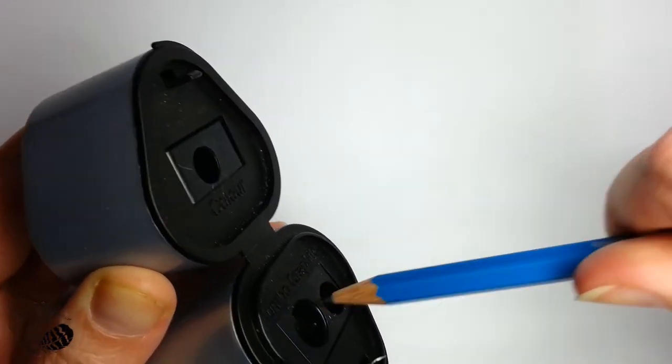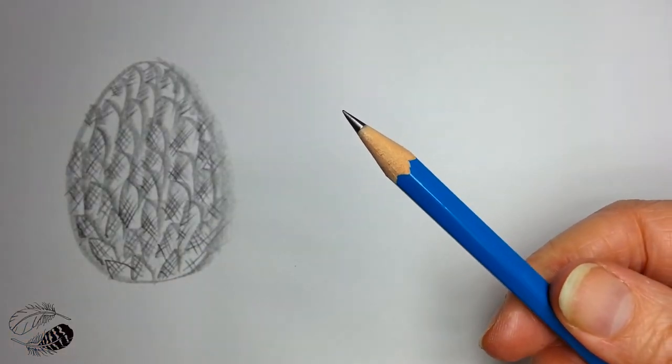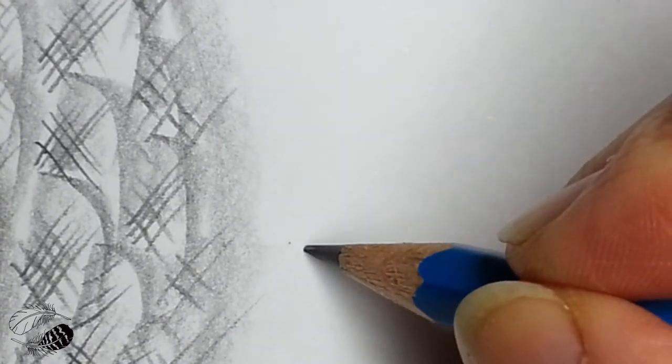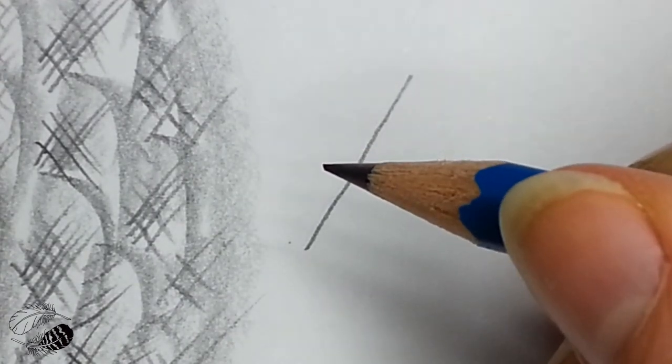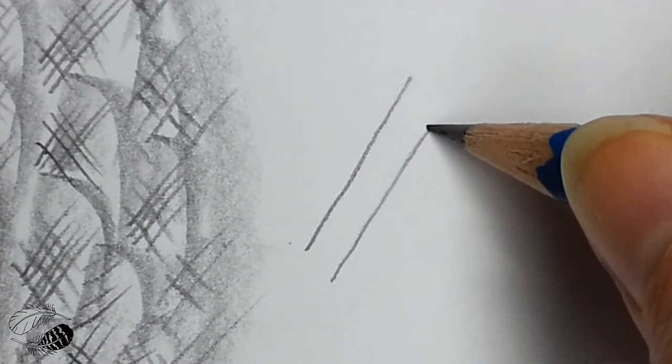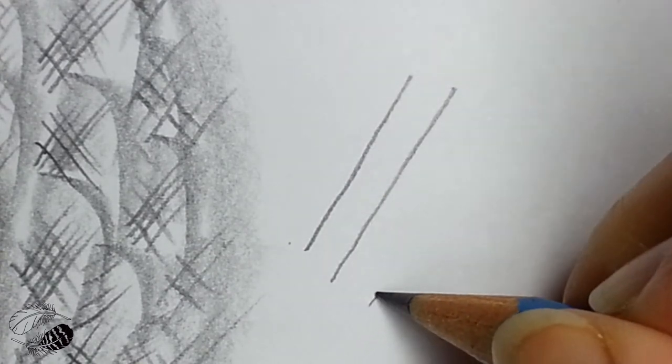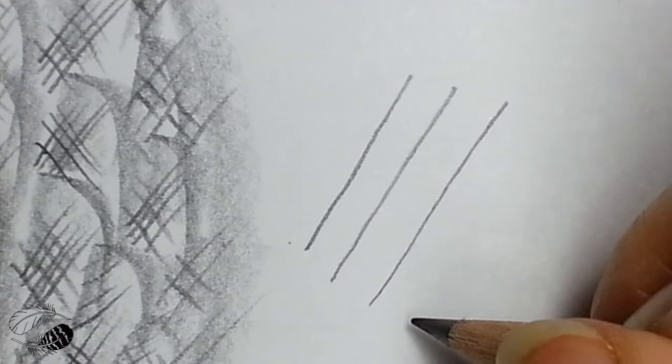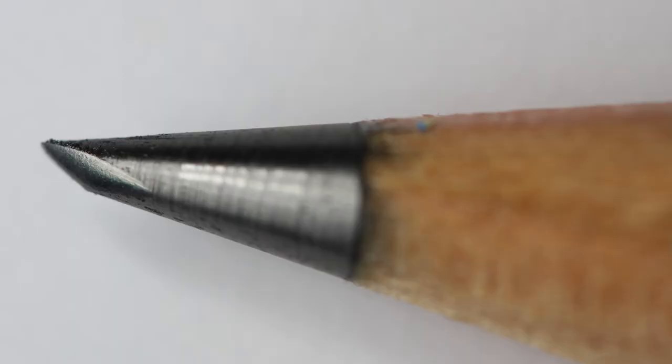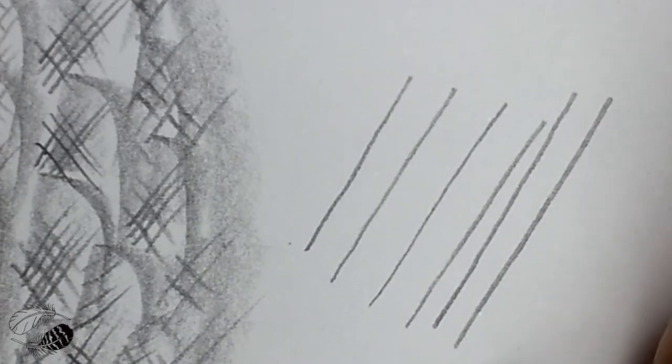Another trick I picked up is that while you're drawing, you can turn the pencil slightly to get the finer part of the lead. If you're making a lot of marks in one direction, it makes a diagonal angle to the lead. I'm making lots of marks, and it creates an angled edge.